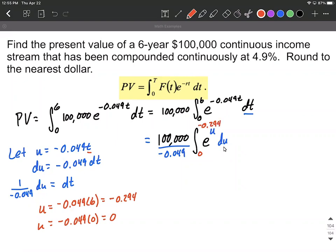Now to finish this up, I'm going to bring the constant along. We're going to integrate. So we go e to the u. Its antiderivative is also e to the u. But that's going to be evaluated between 0 and negative 0.294. To finish this up, we're going to substitute in our bounds of integration.